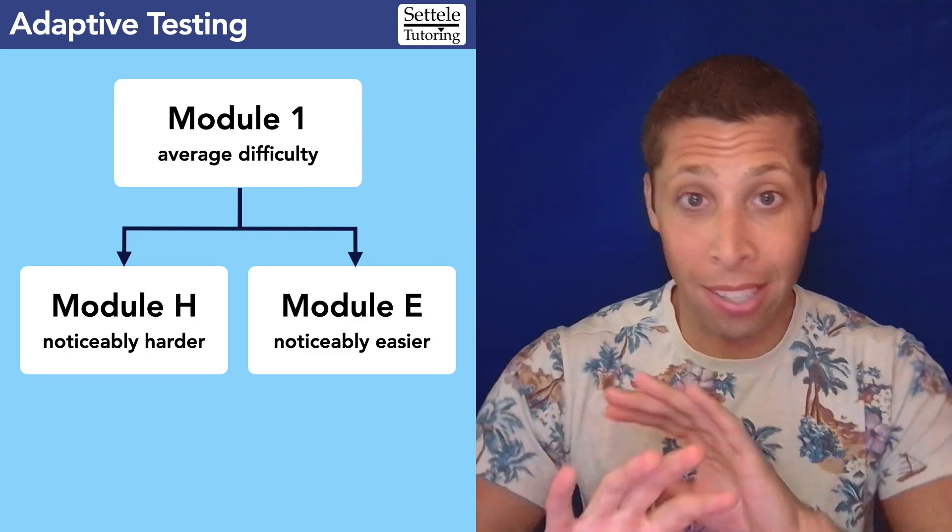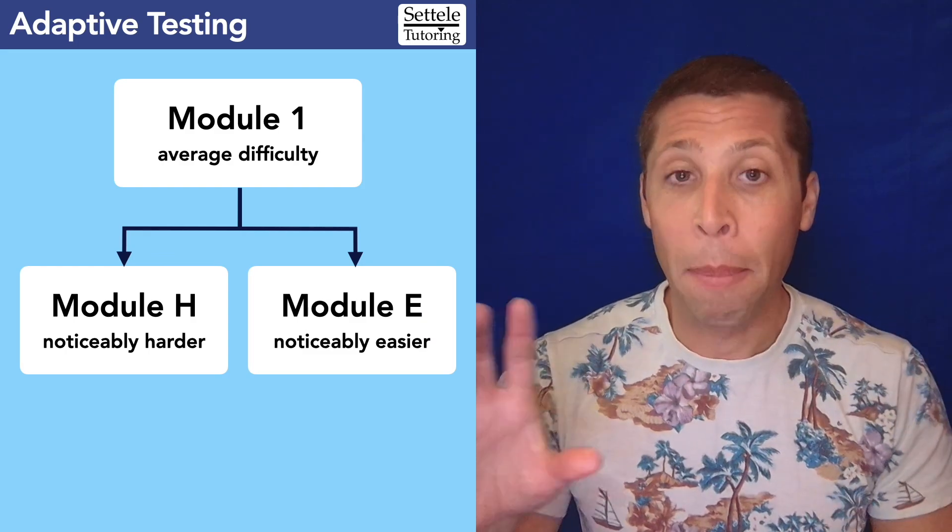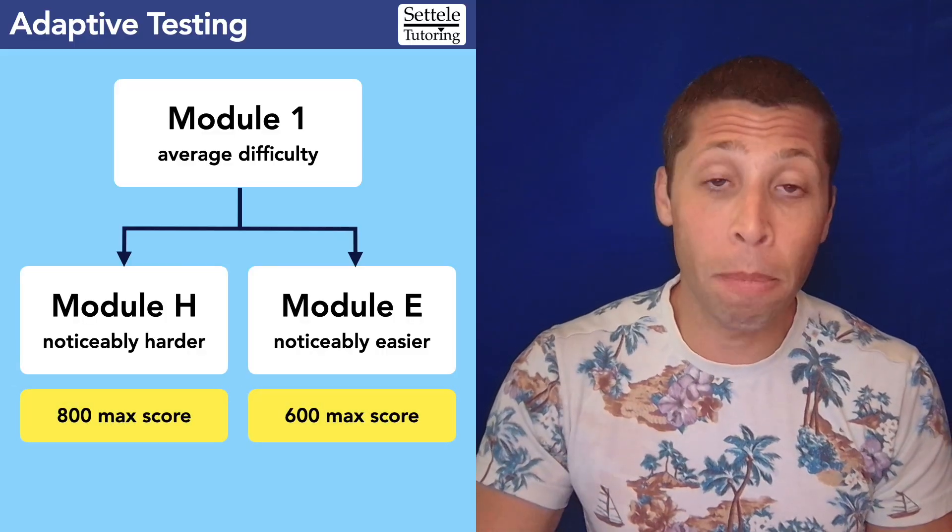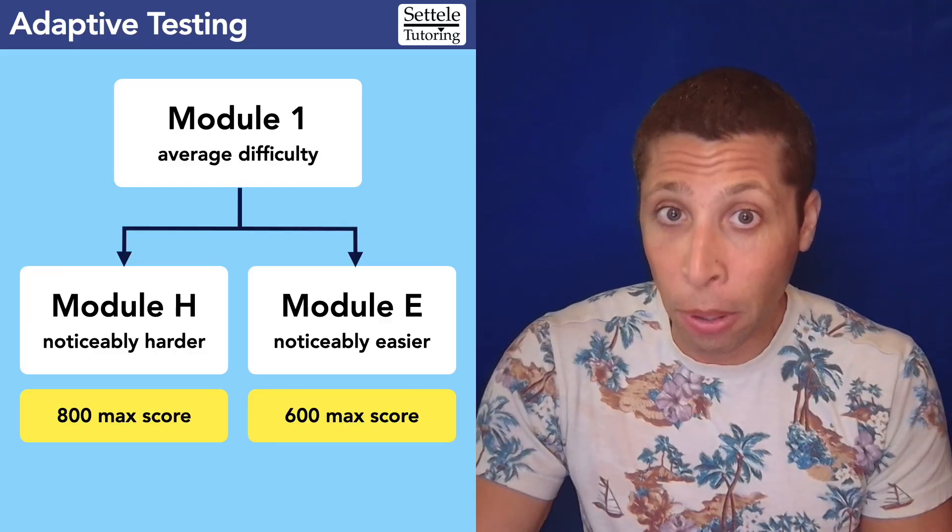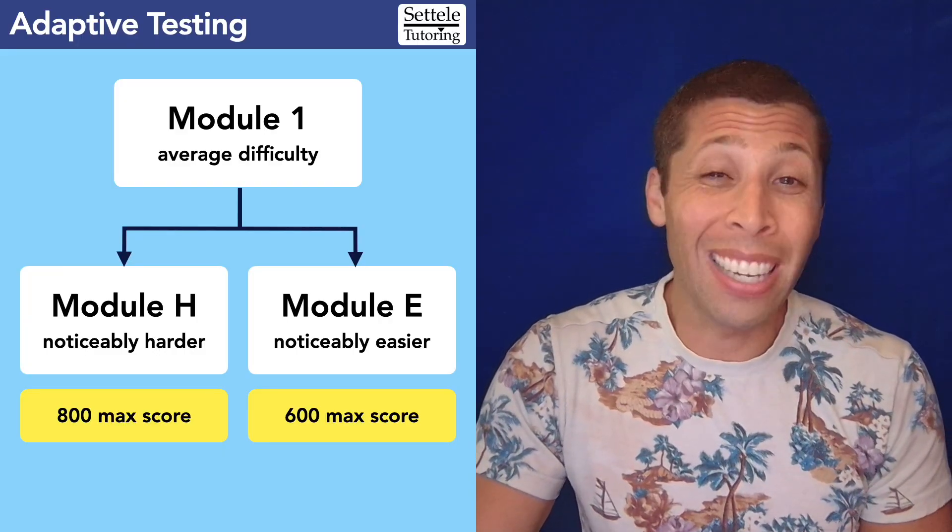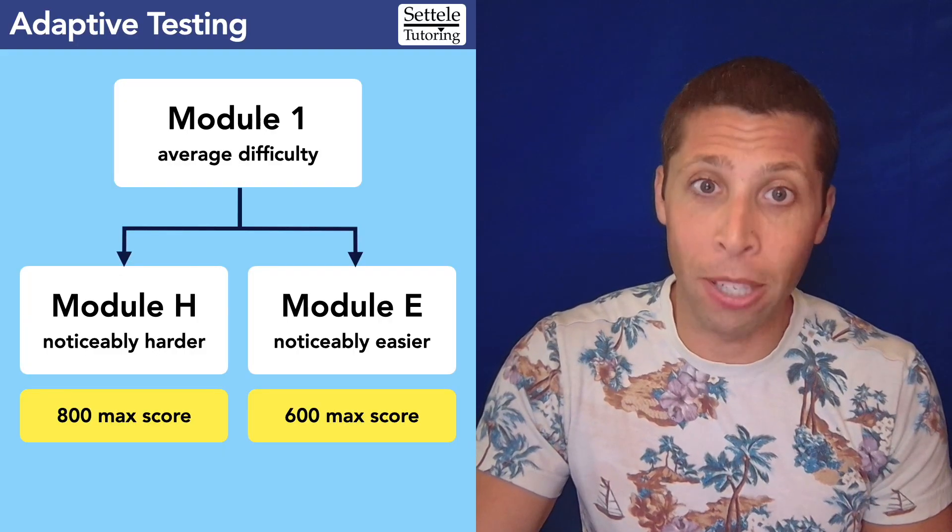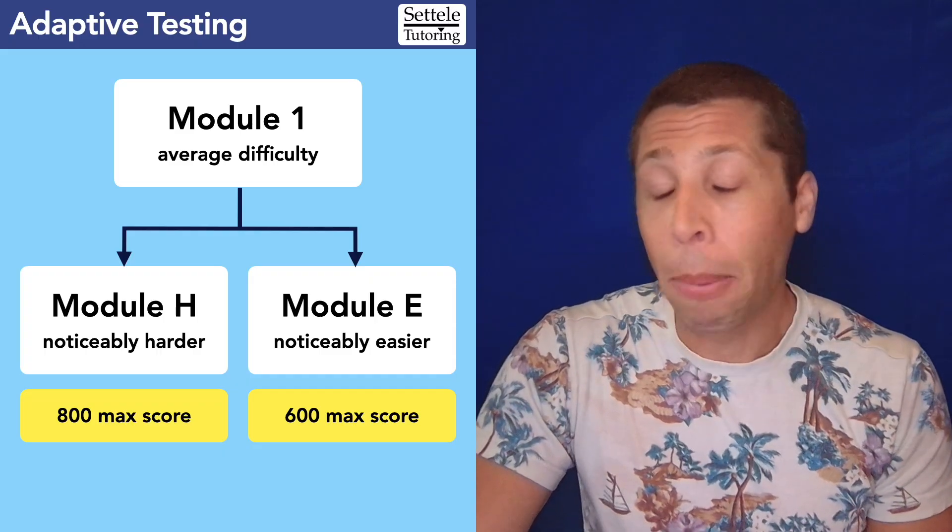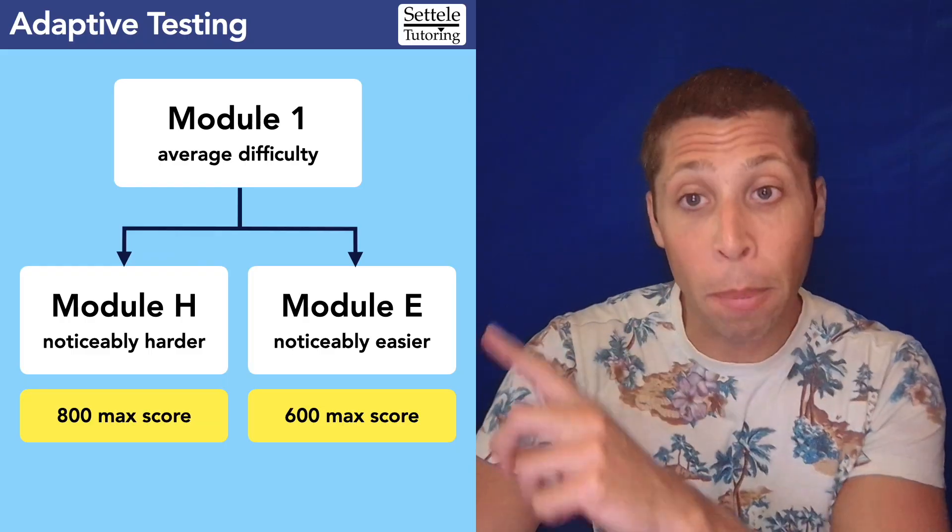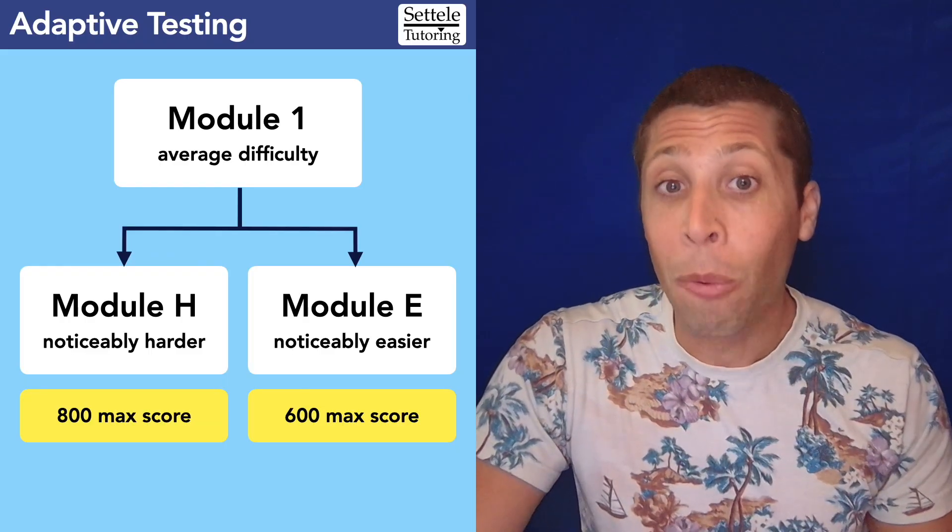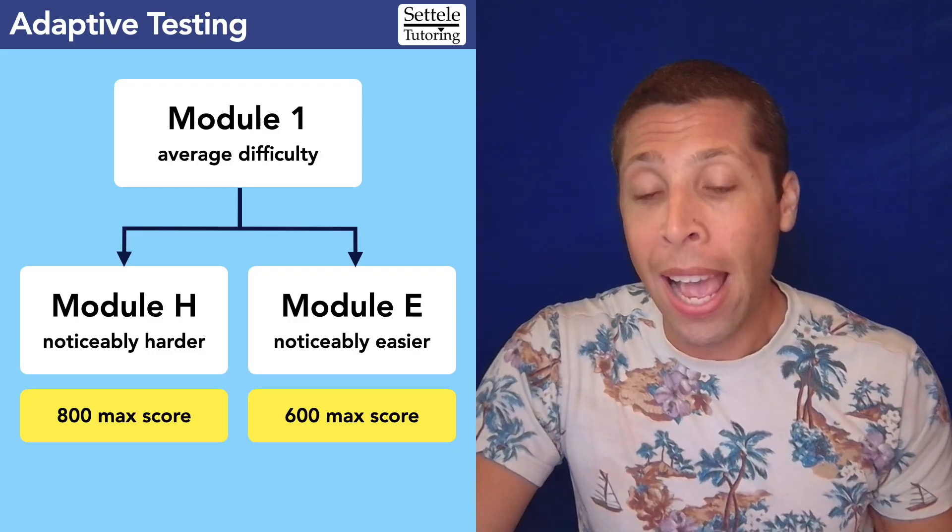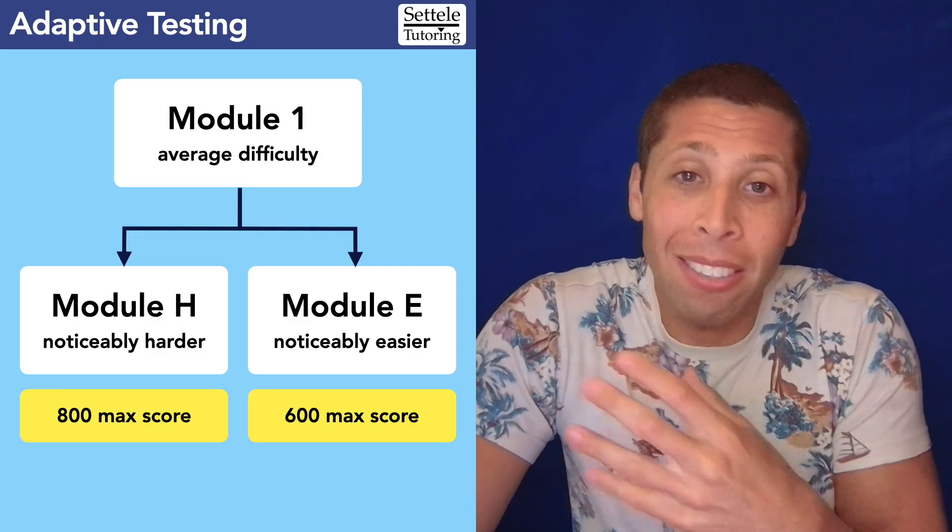And the biggest difference, yes, is the difficulty of the questions, but also the scoring of these two modules. If you get placed in the hard module, you still have a chance at a perfect 800. If you get placed in the easy module, you're basically limited to a 600, maybe 610, maybe 620. It's an estimate, but you are not getting a 700 if you get placed in that easy module. So we do not want to be placed in the easy module if we want a top score.